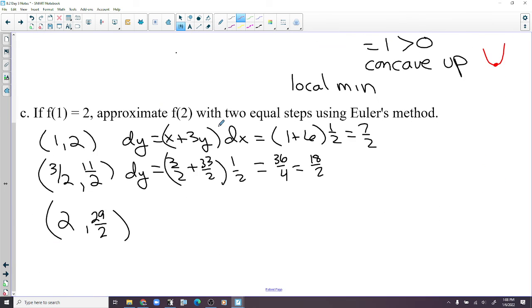Well, if you plug 1, 2 in there, 1 plus 6, that's 7, times a half is 7 halves. Well, we're going to add 7 halves to that x. 4 halves plus 7 halves is 11 halves. Now we repeat the process. x plus 3y is 33 halves. That's 36 halves, but then times a half is 36 fourths, which is 18 halves. So 18 plus 11 is 29 halves.